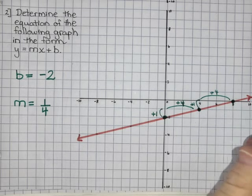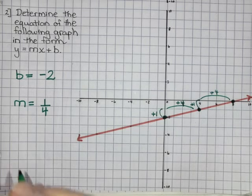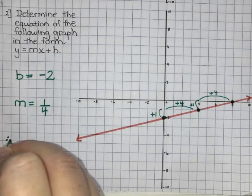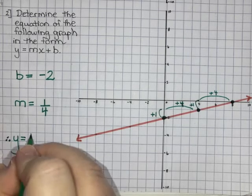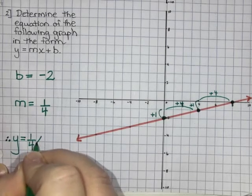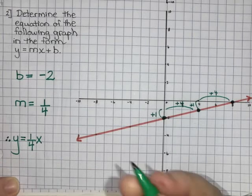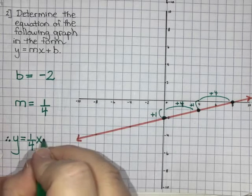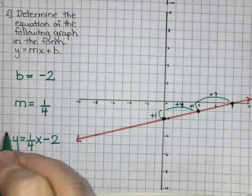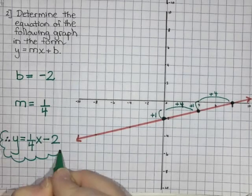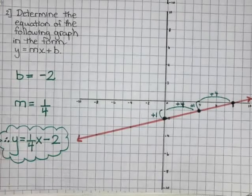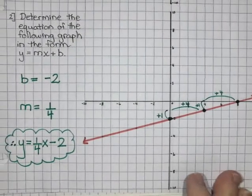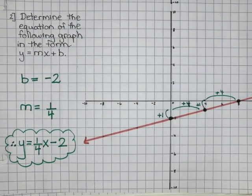That means my equation is going to be y equals m, so one quarter x, and then plus b. I'm not going to write plus negative two, instead I'm just going to write minus two. And there is my equation: y equals one quarter x minus two. That's all you need to know for today about graphing lines.